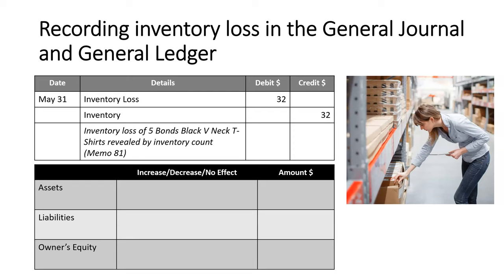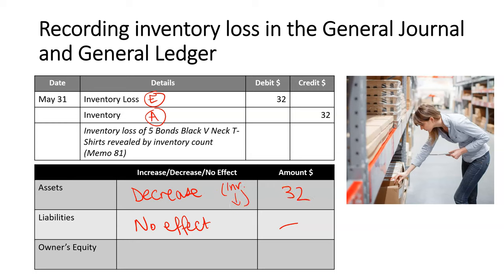What effect does this have? Inventory loss is an expense and inventory is an asset, so straight away we can see there is no effect on liabilities. Inventory is being credited, causing a decrease — inventory is going down by $32. Therefore, owner's equity is also decreasing, because when expenses increase, net profit decreases. So overall, we have a decrease in assets and a decrease in owner's equity for inventory loss.